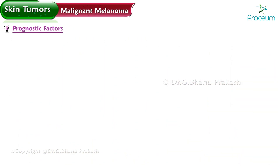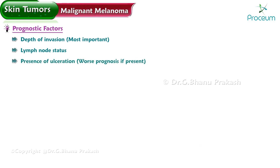Prognostic factors for malignant melanoma include depth of invasion, which is the most important prognostic factor, lymph node status, presence of ulceration (which indicates worse prognosis if present), satellite lesions, and distant metastasis.